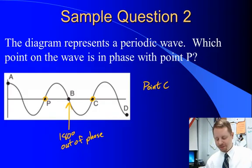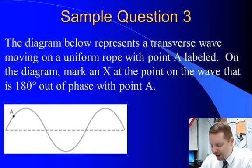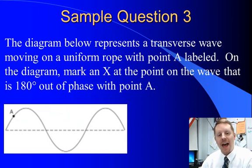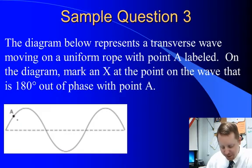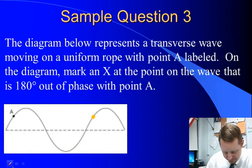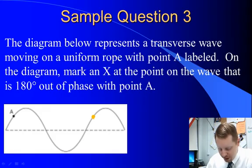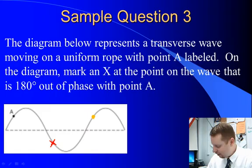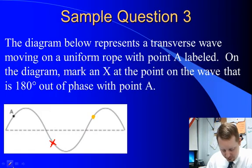Let's take a look at another one. The diagram below represents a transverse wave moving on a uniform rope with point A labeled. On the diagram, make an X at the point on the wave that is 180 degrees out of phase with point A. Well, let's start. If that's A, it's about halfway up the rise of a wave. Let's find the next point that is in phase. That would be over there. So if I want to find the point that is 180 degrees out of phase, I'm going to go directly between those two. And about halfway in between looks like it'd be right about there, 180 degrees out of phase with point A.